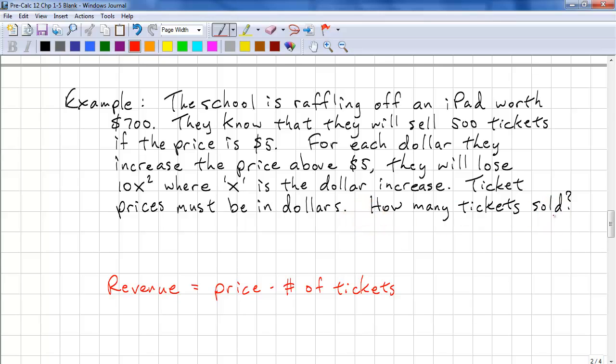So we want to find the dollar increase that will maximize the number of tickets sold. And then find out how many tickets are going to be sold. Okay, so here's our variable, P, price.